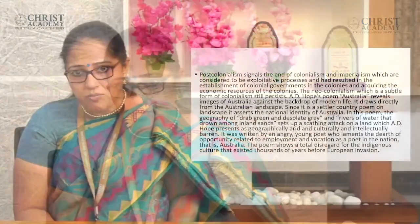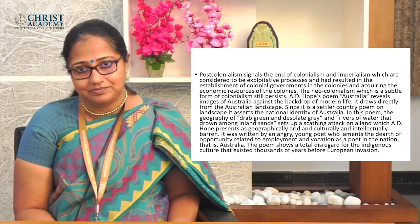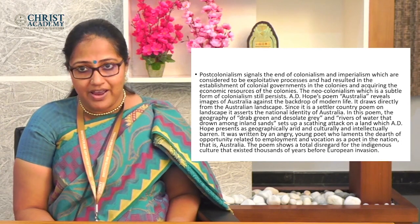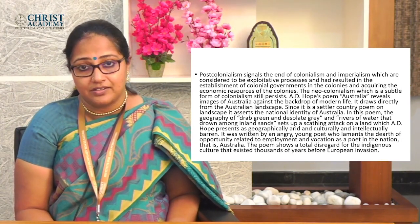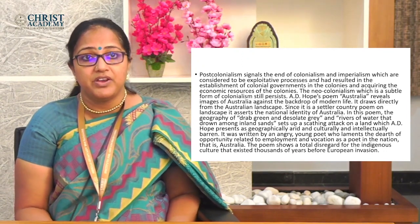The poem shows a total disregard for the indigenous culture that existed thousands of years before European nations. A.D. Hope, being a white poet settled in Australia, does not take into consideration the indigenous Aboriginal cultures that existed thousands of years before, which do form a part of Australia's heritage. That is one drawback when discussing this poem as an example of post-colonialism, because post-colonialism as a theory focuses on doing justice to the dispossessed, oppressed, exploited, and deprived, and remains valid today although the heydays of colonialism are old.